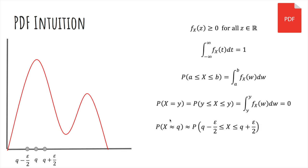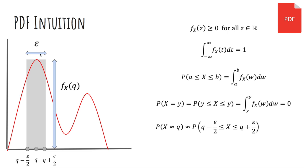The probability that x is approximately q is approximately the probability that x is between q minus epsilon over 2 and q plus epsilon over 2. If epsilon is small, you can use a good rectangle approximation — a Riemann rectangle. The area of this rectangle is epsilon times the density function, because the height is the density function evaluated at q. For epsilon very small, this is pretty accurate, so it's about epsilon times the density function.